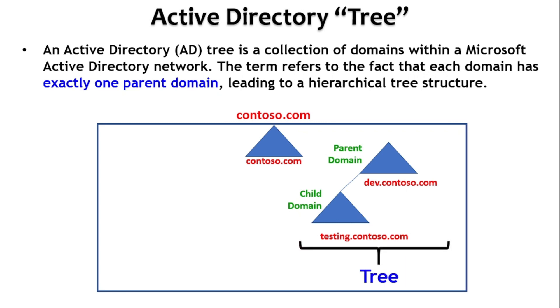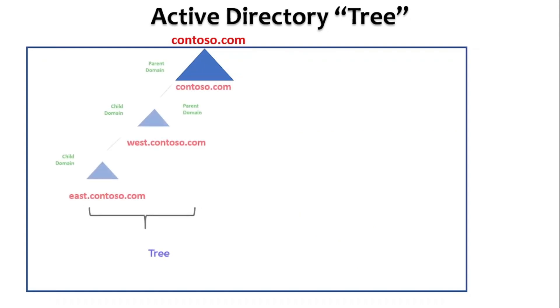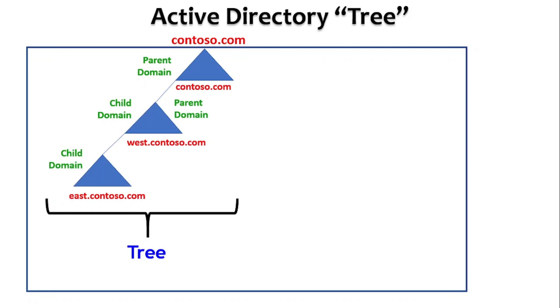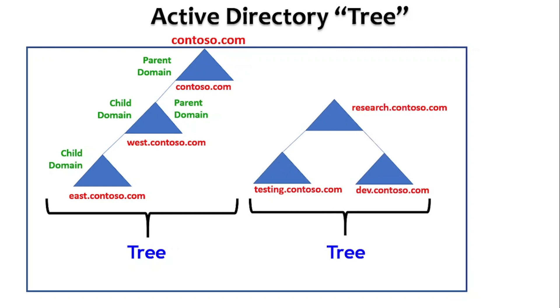Here is another example: contoso.com is a forest and we have west.contoso.com and east.contoso.com. West.contoso.com is a parent domain for east.contoso.com, and contoso.com is a parent domain for west.contoso.com. Another structure could have research.contoso.com with two child domains — testing and dev. But remember, there is only one parent domain for any child domain; there cannot be two parents for a single child.